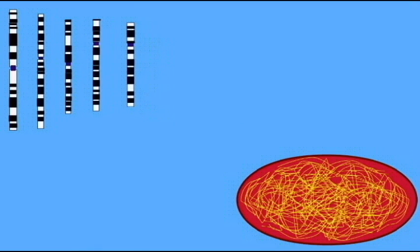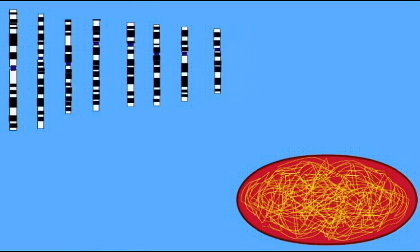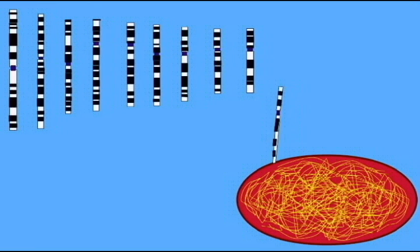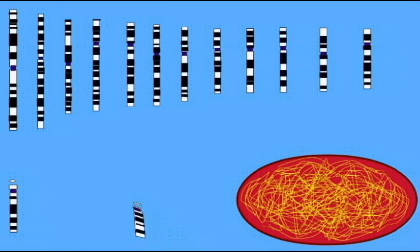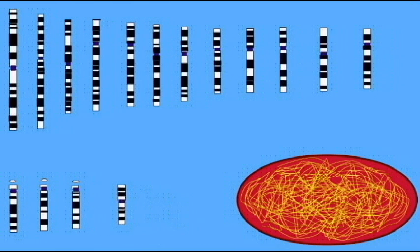L1 retrotransposons compose about 17% of the human genome. They cause variation in the mutations they generate upon insertion in new regions, and by their ability to move other sequences such as SINEs, pseudogenes, and exons.